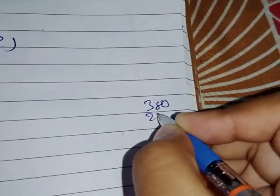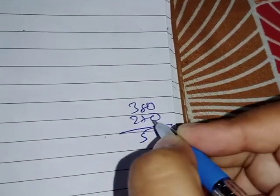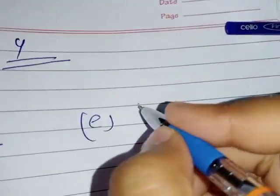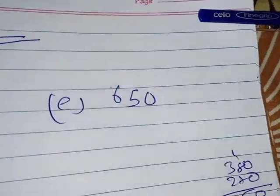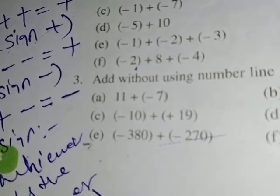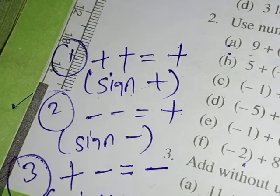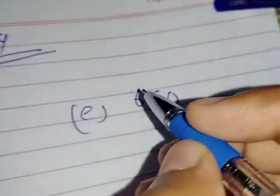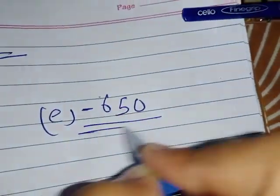380 plus 270, what we will get here? 650. Why are we doing addition? Because minus minus is plus. And minus minus is plus we know, but which sign are we putting? That is minus sign. Therefore minus 650 will be your answer.